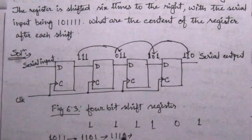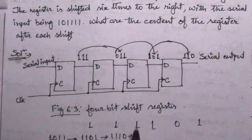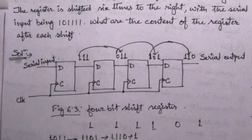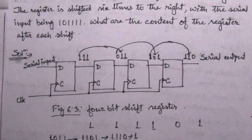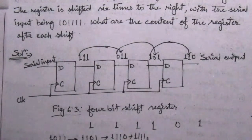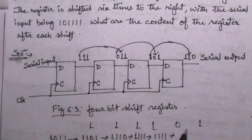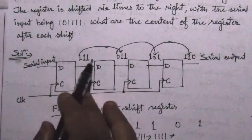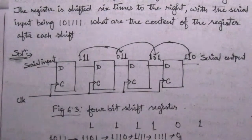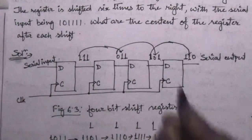After the third clock cycle, the serial input is again 1, so we get 1111. After the fourth clock cycle, the serial input is 0, so the content of the register becomes 0111.